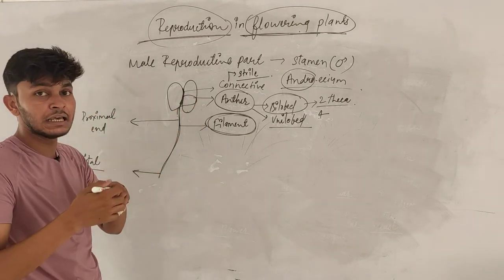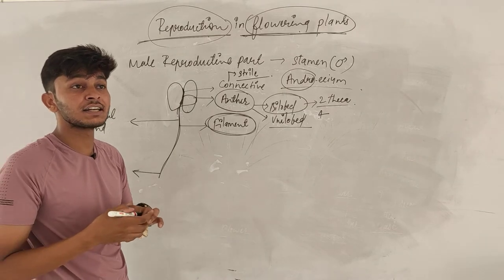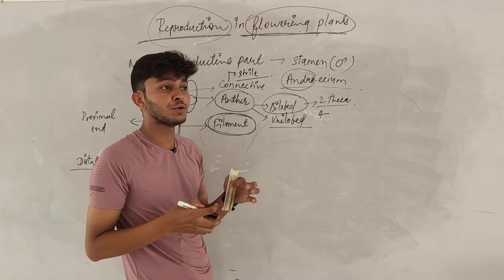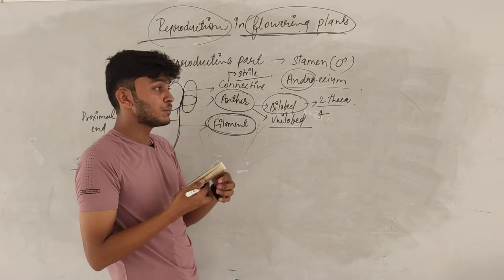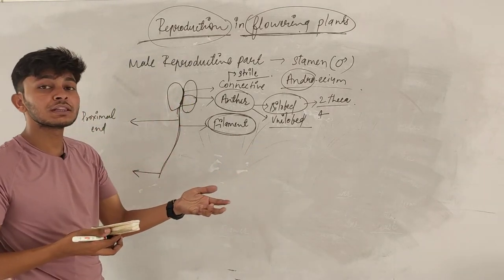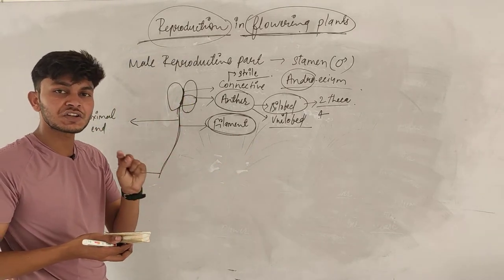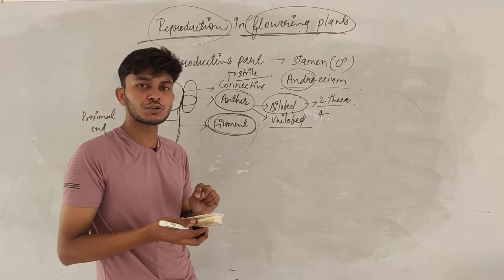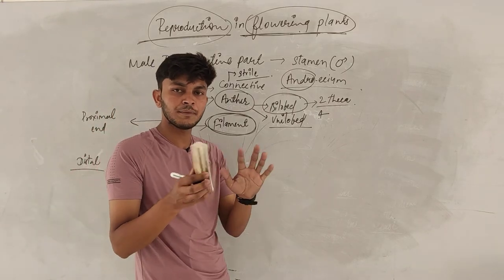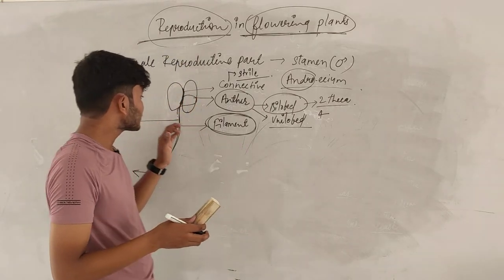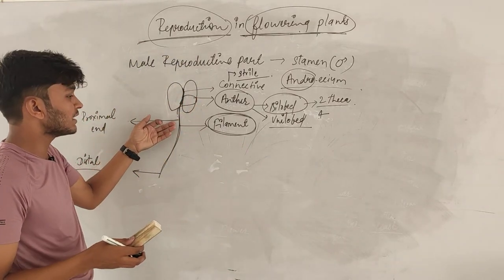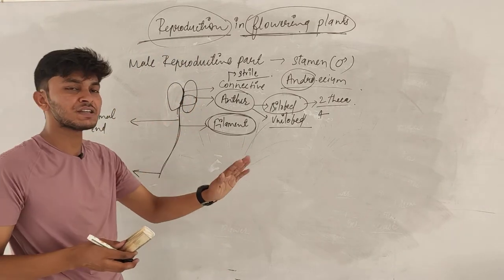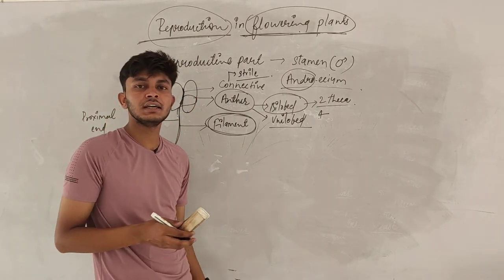Another type is versatile. In versatile attachment, plants rely more on wind pollination. There are varieties of attachment types that are known, but these are not mentioned in the NCERT textbook.